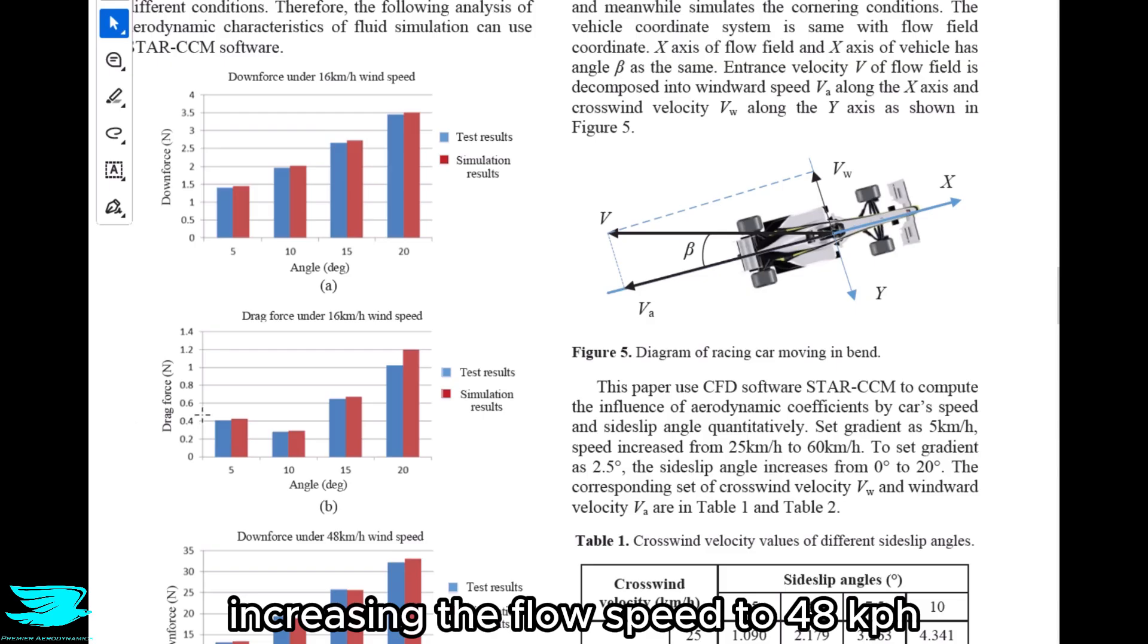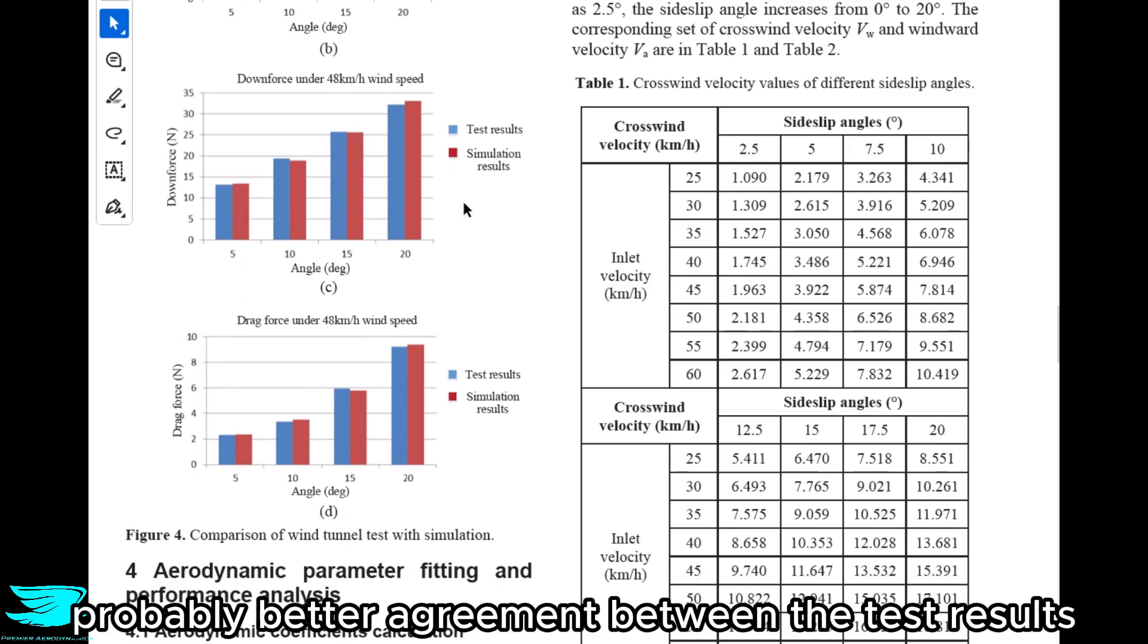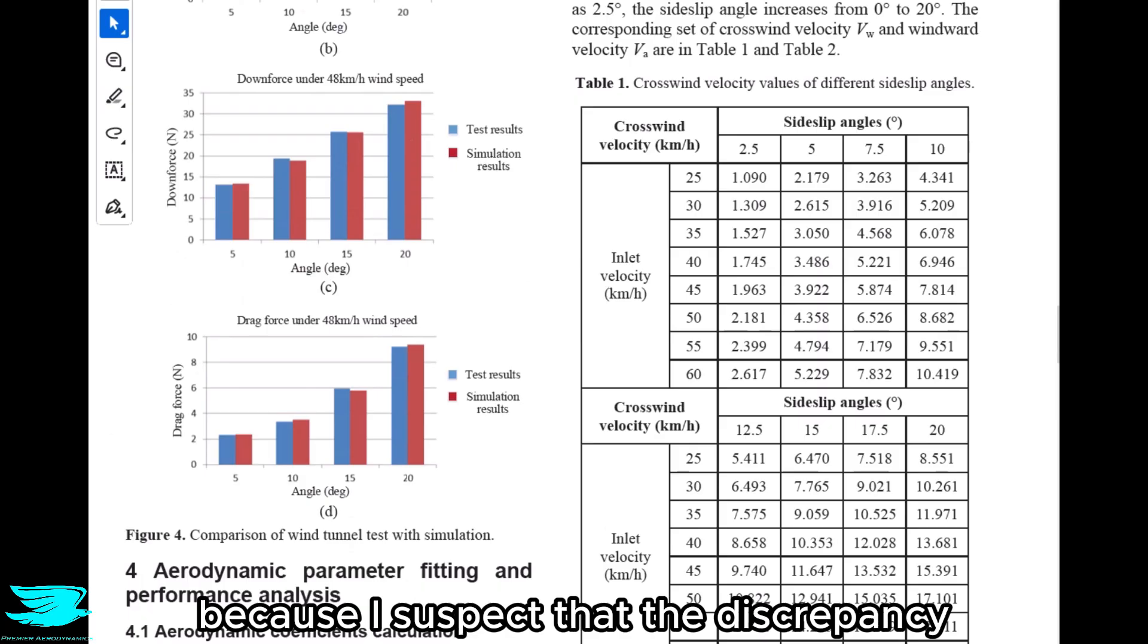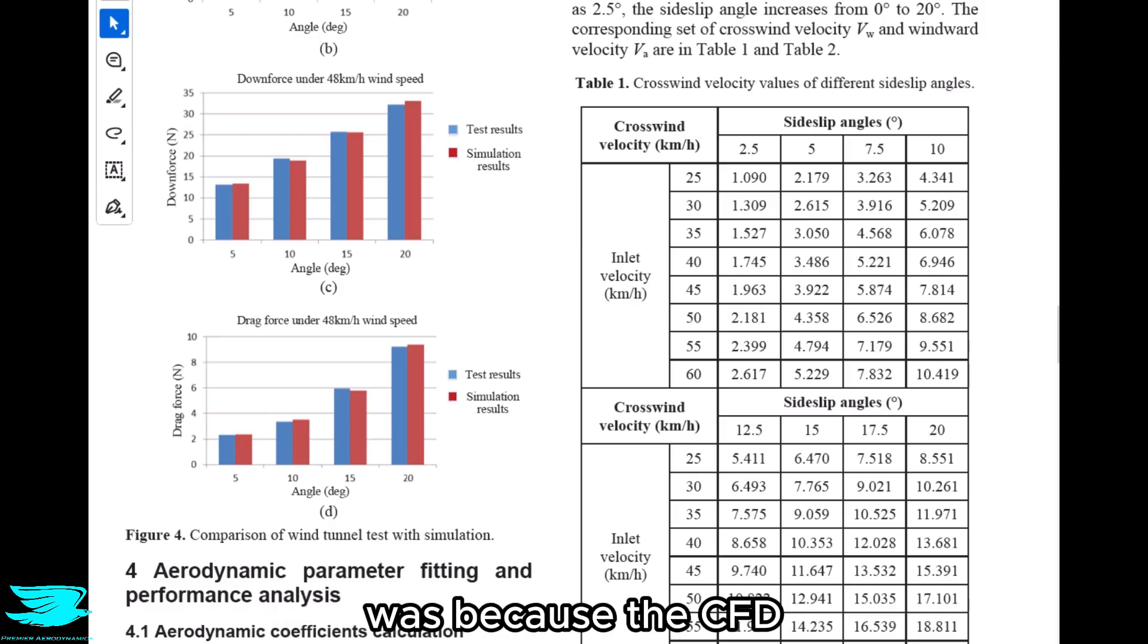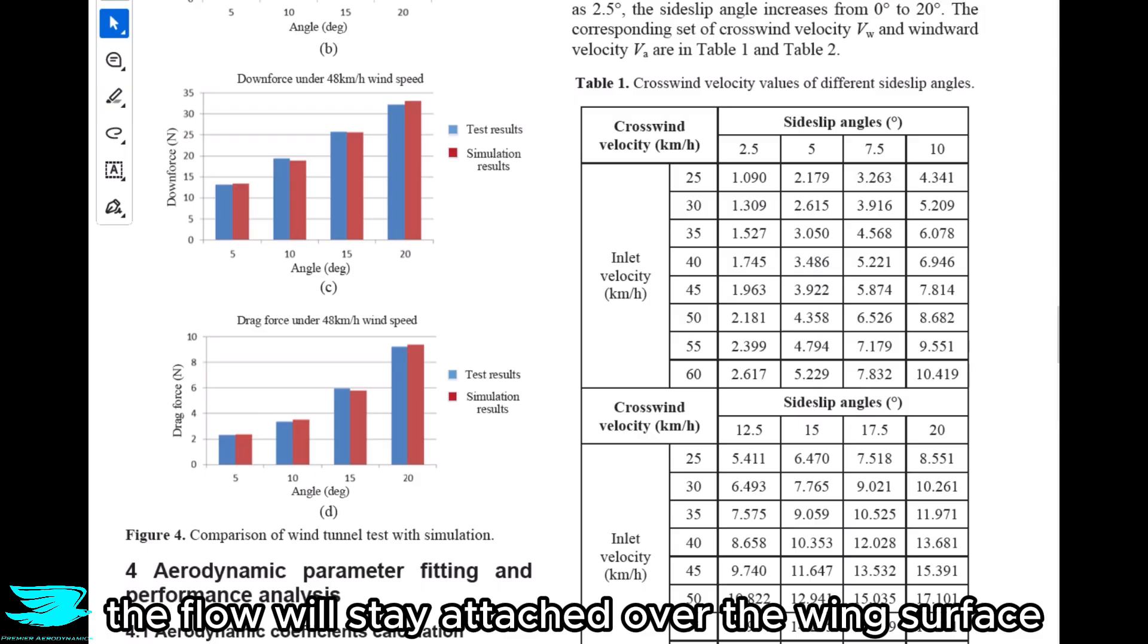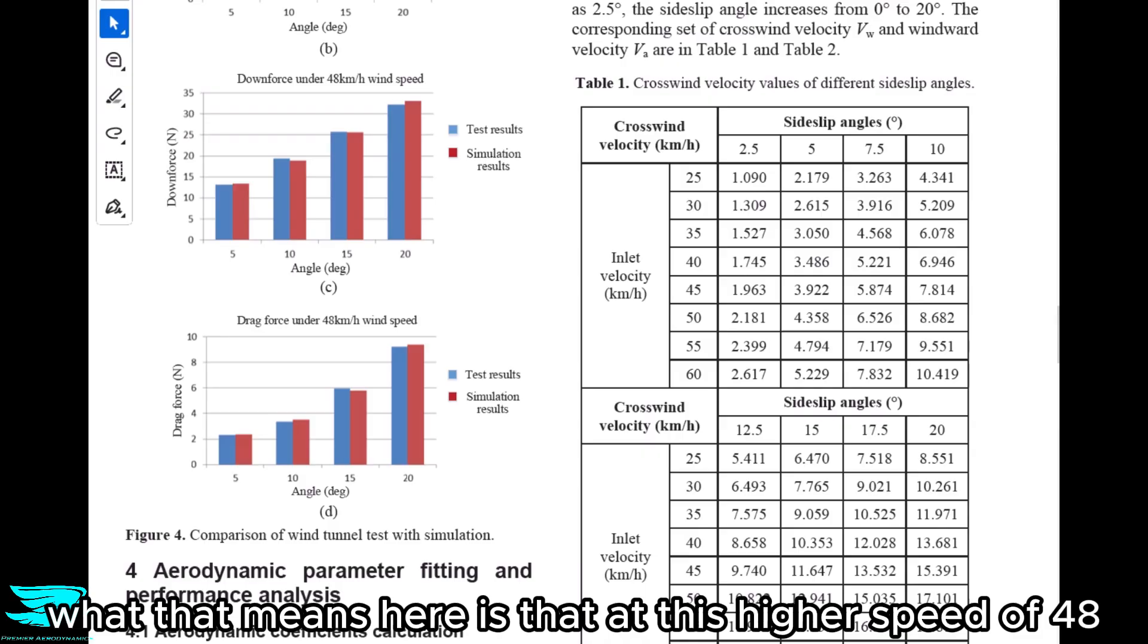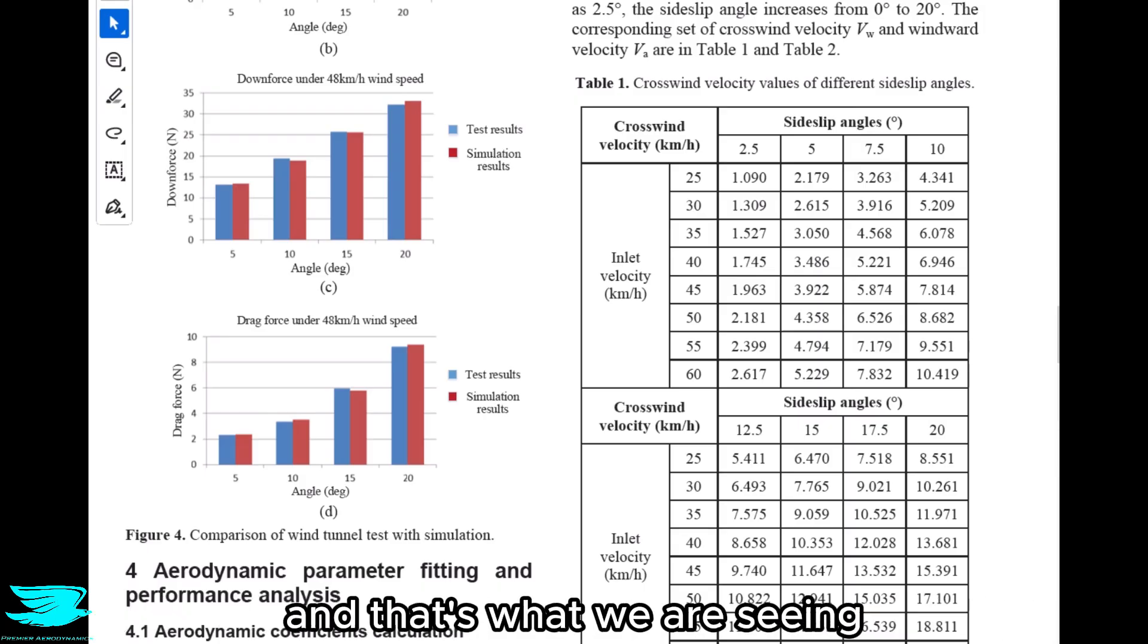Increasing the flow speed to 48 kph to the bottom two graphs now, we have probably better agreement between the test results and the CFD, particularly at 20 degrees. That makes sense because I suspect that the discrepancy we saw in the second graph for the drag at 16 kph for 20 degrees was because the CFD was getting the boundary layer separation wrong. If you were to speed up the flow, in other words increase the Reynolds number, the flow will stay attached over the wing surface better. So you can push to higher angles of attack without getting flow separation. What that means here is that at this higher speed of 48 kph, we should get less flow separation at 20 degrees. So the CFD should give more accurate results here. And that's what we are seeing.